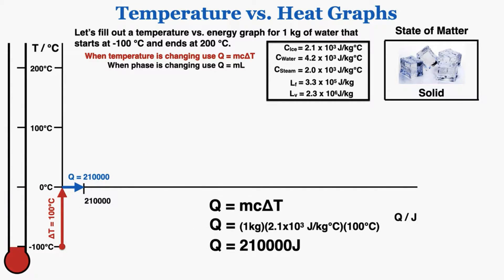Because neither T nor Q are squared in this equation, and mass and specific heat stay constant, Q and ΔT have a linear relationship — so these graphs are always straight lines in ideal situations. The graph starts at negative 100 degrees Celsius and increases linearly until it reaches 0 degrees Celsius at 210,000 joules. This gives a visual of how much heat energy is needed to increase its temperature by 100 degrees, during which time the water is in its solid state.